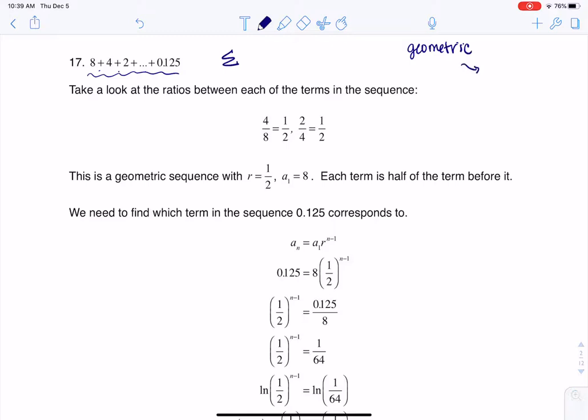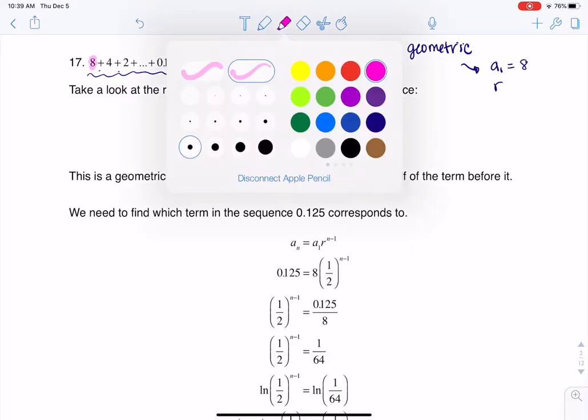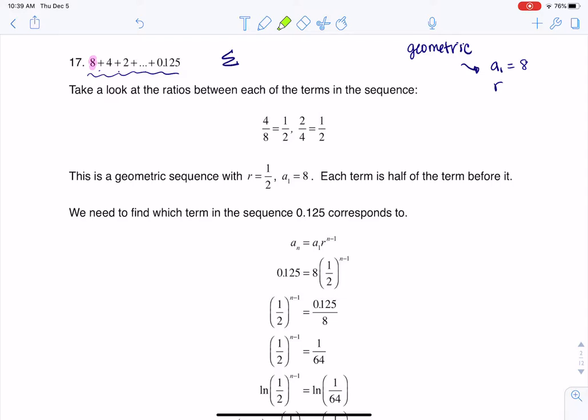So if it's geometric, whether it's a sequence or a series, it's really good to know a sub 1, and it's great to know r also. If I want to find a sub 1, I can just see it right there. It's 8. And if I want to find r, I'll change my highlighter color here. I can take any term and divide it by the previous term, so I'll go with 4 in ratio to 8, and then that ratio is going to be 1 half.